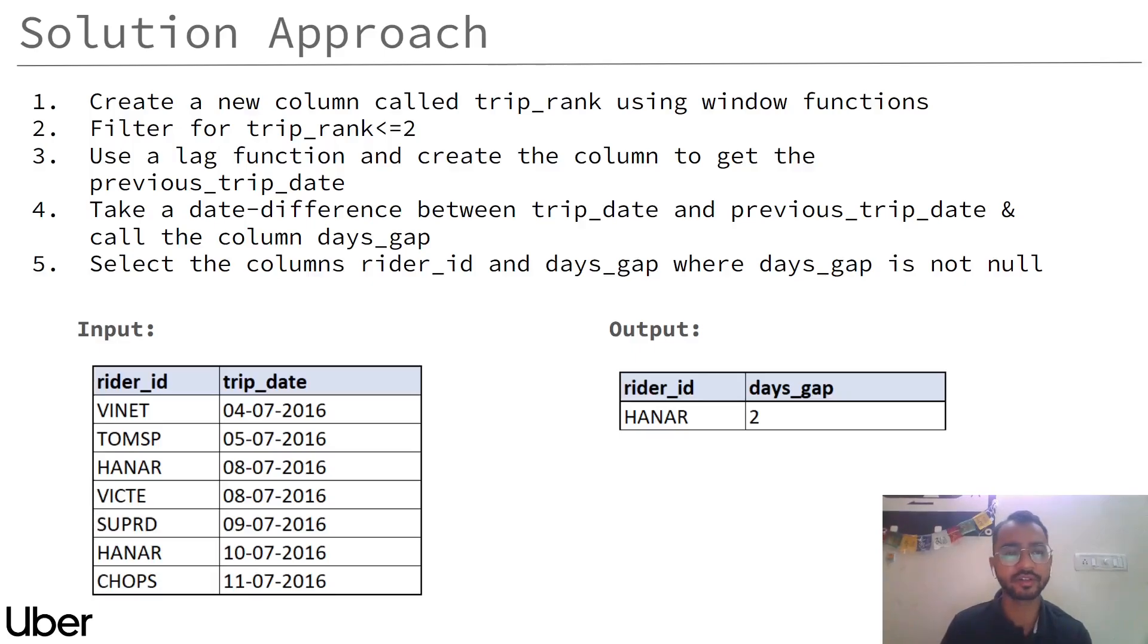After that, we need to take a difference of the first trip date and the second trip date. We can do that by simply creating a new column, which is my third step, where I'll use the lag function to create a previous trip date column.